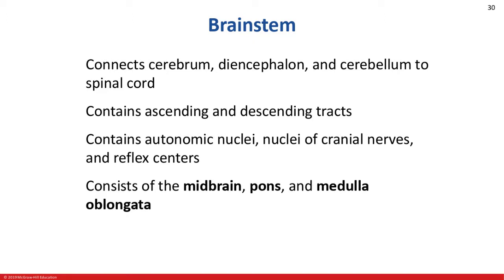In this area, we're going to find many critical components. We'll find our ascending and descending tracts. In the central nervous system, a tract is a bundle of parallel axons. In the peripheral nervous system, a bundle of parallel axons is called a nerve, but in the central nervous system, we call those tracts.